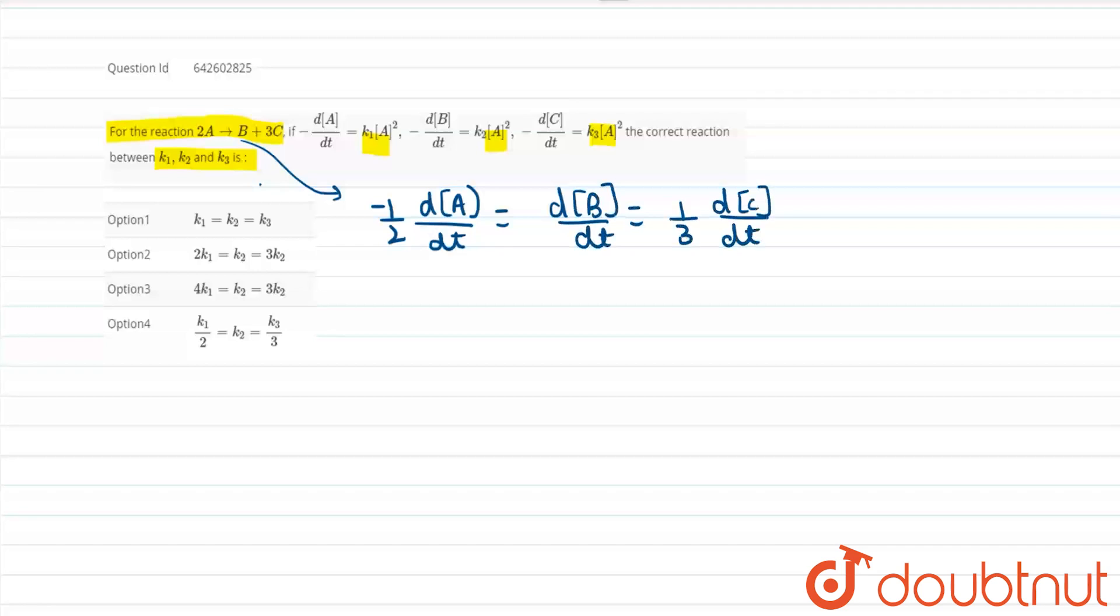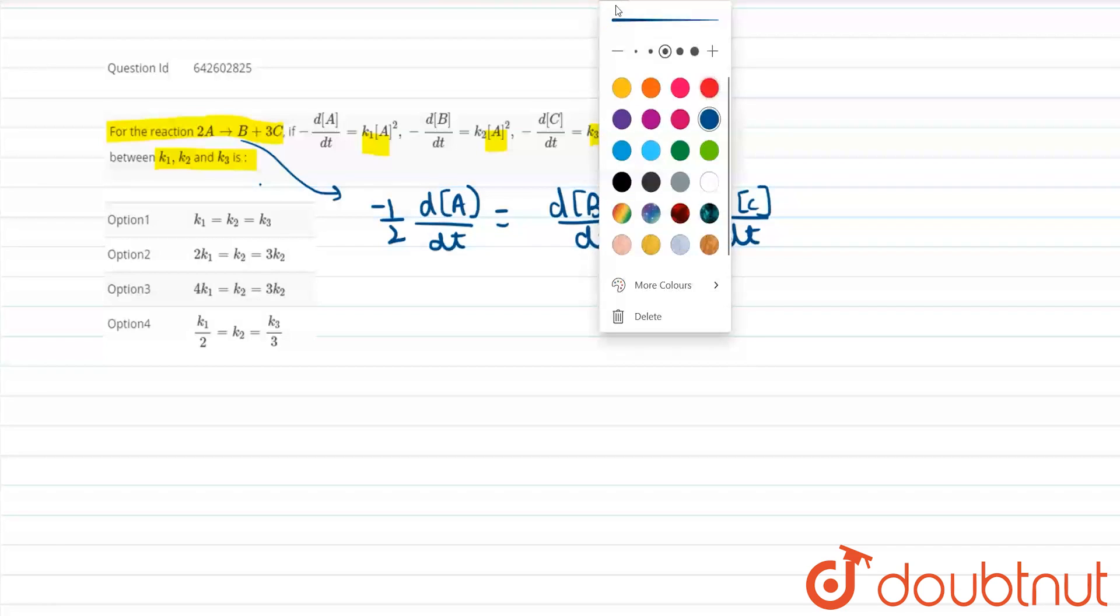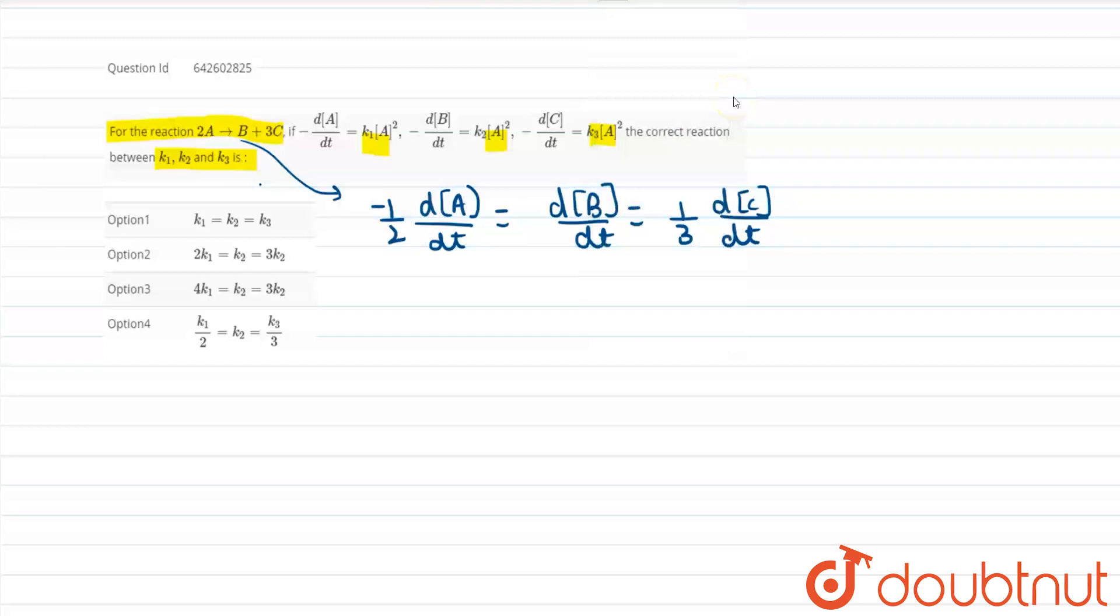Okay, we know that this will happen and these minus and positive signs are indicating which is reactant and which is product. Okay, and friends, this is since this is rate of reaction.